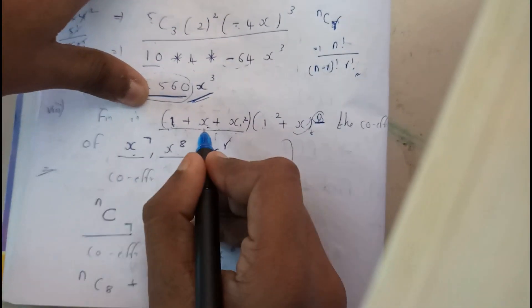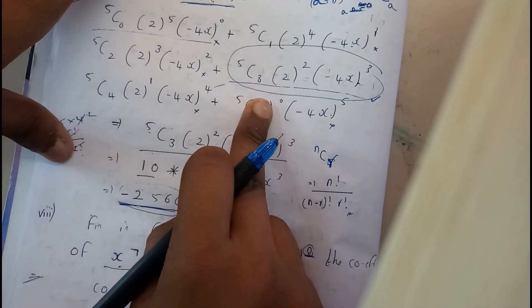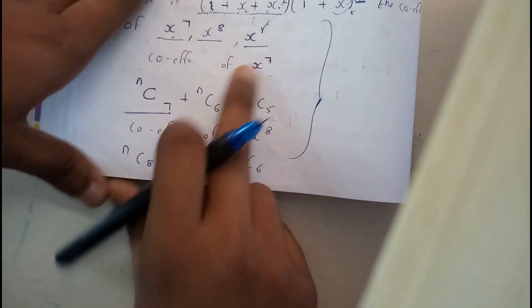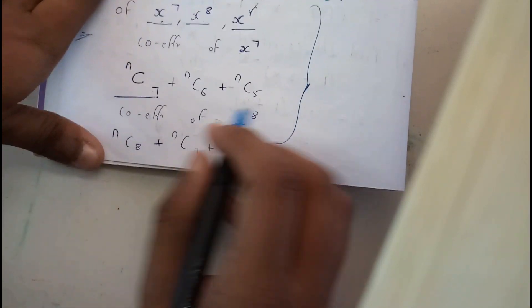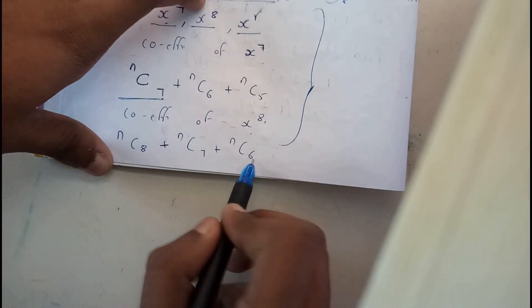This is possible if you want to solve a problem like this. It is must and should that you should have all the coefficients are 1's. Or else, you need to follow this method. So, further continuing, if x power 8, I need 8 here, 7 here, 6 here. That is what I wrote here.